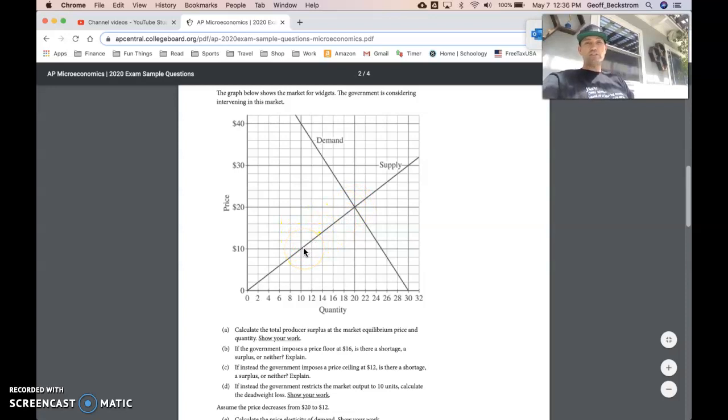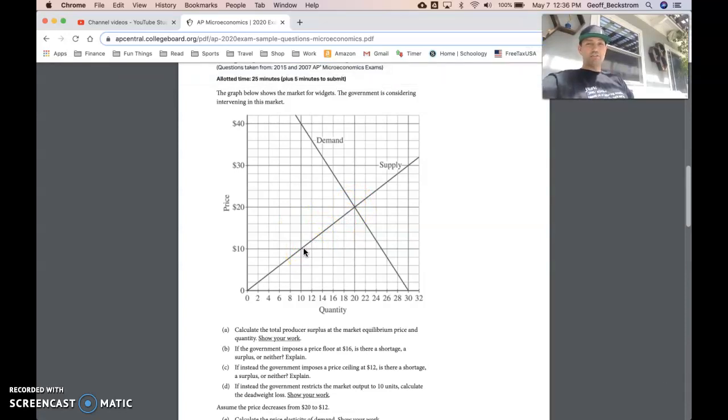Remember, deadweight loss in this situation is created by the loss of a transaction. So anytime anything comes between a buyer and a seller, we can call that deadweight loss. So under any other normal condition, the buyer and the seller would have found each other. In this case, they can't because the government says 10 units only. So our triangle is $30 high, or excuse me, the base of the triangle is $30, and the height of the triangle is 10 units. So 30 times 10 is $300 divided by 2 is $150 of deadweight loss.